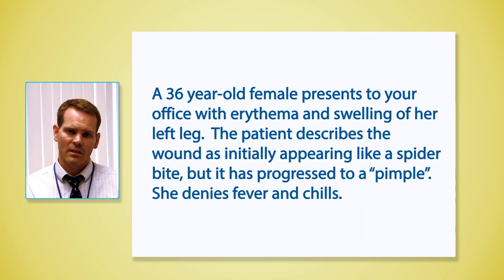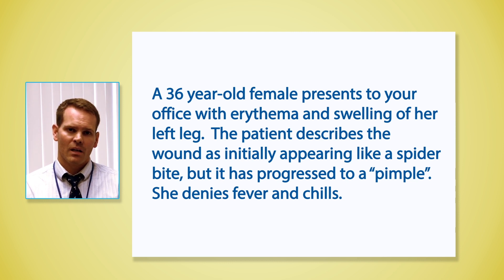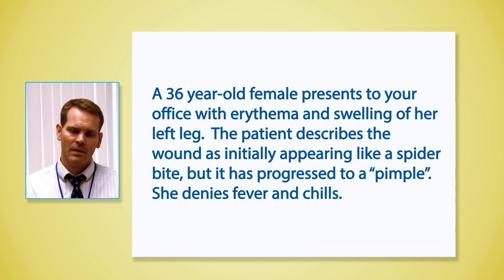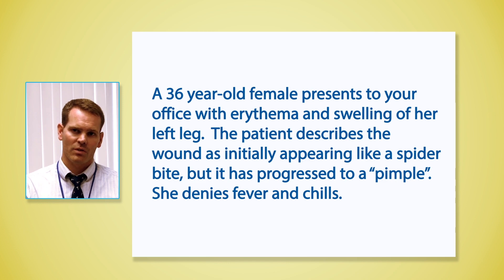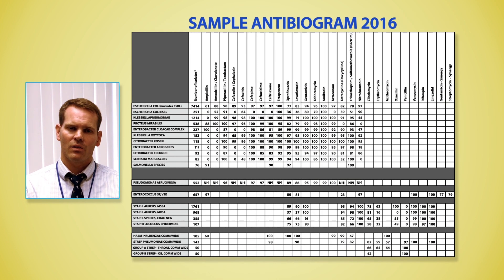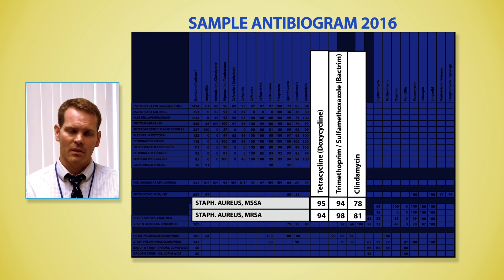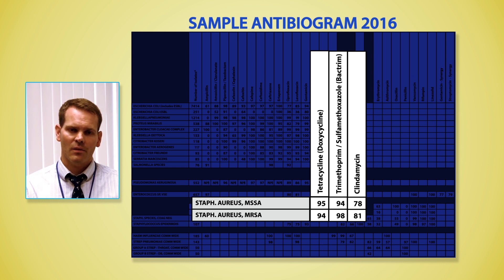Our final case involves a young woman who comes in with a skin and soft tissue infection. She describes a spider bite that has progressed to a pimple on her lower extremity, with areas of cellulitis around it. You know there are different types of cellulitis — purulent and non-purulent. In this case, you'd like to cover Staphylococcus aureus, including MRSA and MSSA. Common antibiotics for this indication, especially for MRSA, would be clindamycin, Bactrim, and doxycycline. Let's look at the antibiogram to see if your initial antibiotic choice would change.